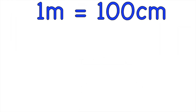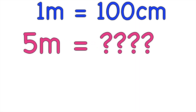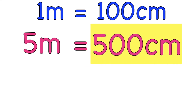Always remember that in every one meter, you have 100 centimeters. So what if you have five meters? How many centimeters do you have? Good job — you will have 500 centimeters. Since in every one meter you have 100 centimeters, five times 100 equals 500 centimeters.